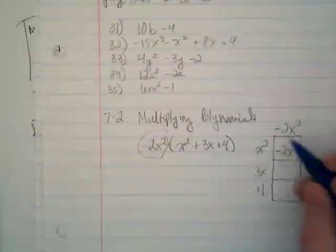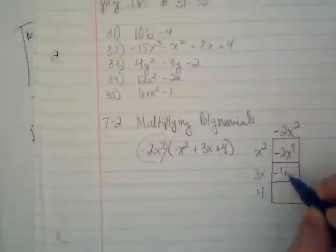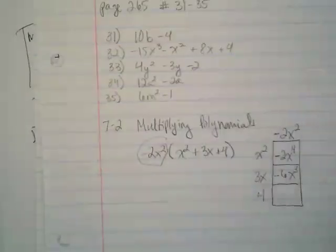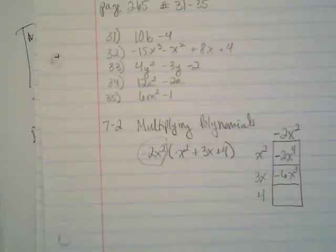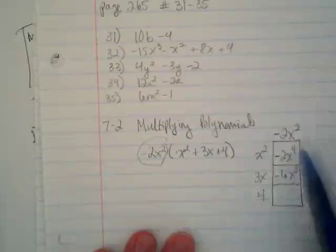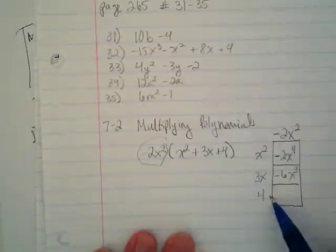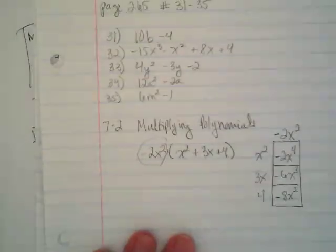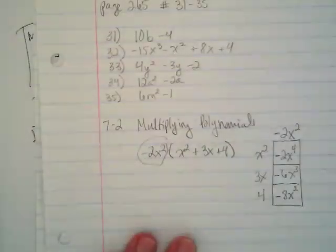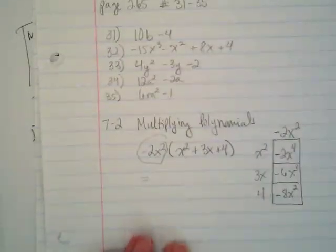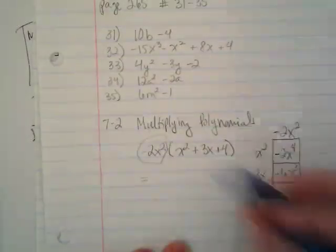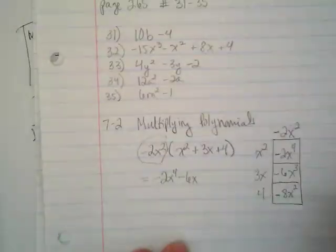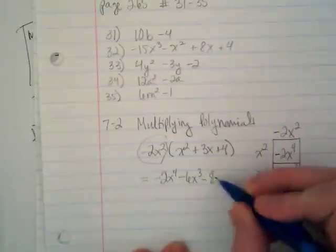Then when we multiply -2 times positive 3, this becomes -6. What do you think happens to the x when I do x times x²? x to the third power, or x cubed. I've got -2x² times positive 4. This becomes -8x². So the answer to this, we pull it out of the box and rewrite it as a trinomial. It is -2x to the fourth minus 6x to the third minus 8x².